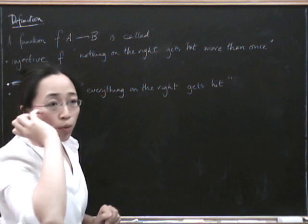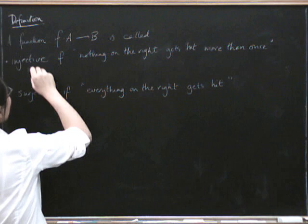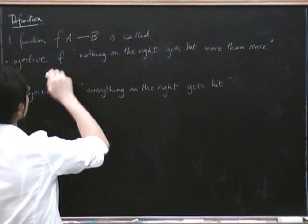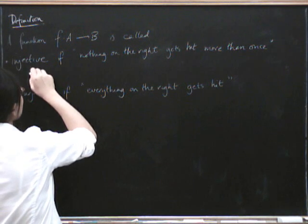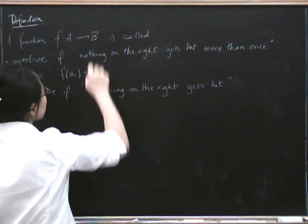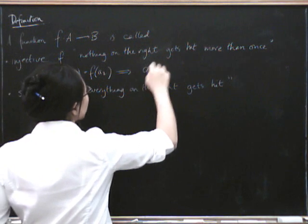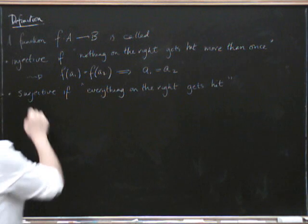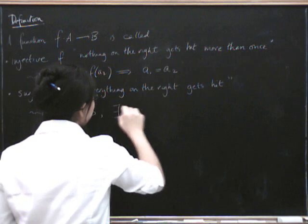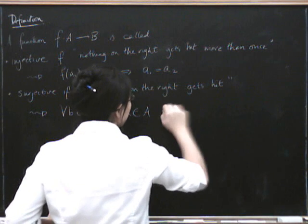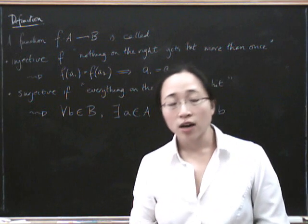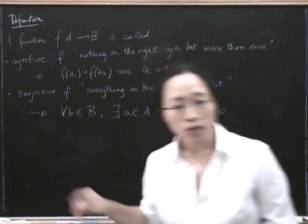Formally, 'nothing on the right gets hit more than once' means: if f(a₁) equals f(a₂), then a₁ equals a₂. The formal definition of surjective means: for all elements in the right-hand side, there exists an element in the left-hand side such that f of that element equals the element on the right-hand side we started with. In the next video I'll explain a bit more what these very formal-looking definitions mean.